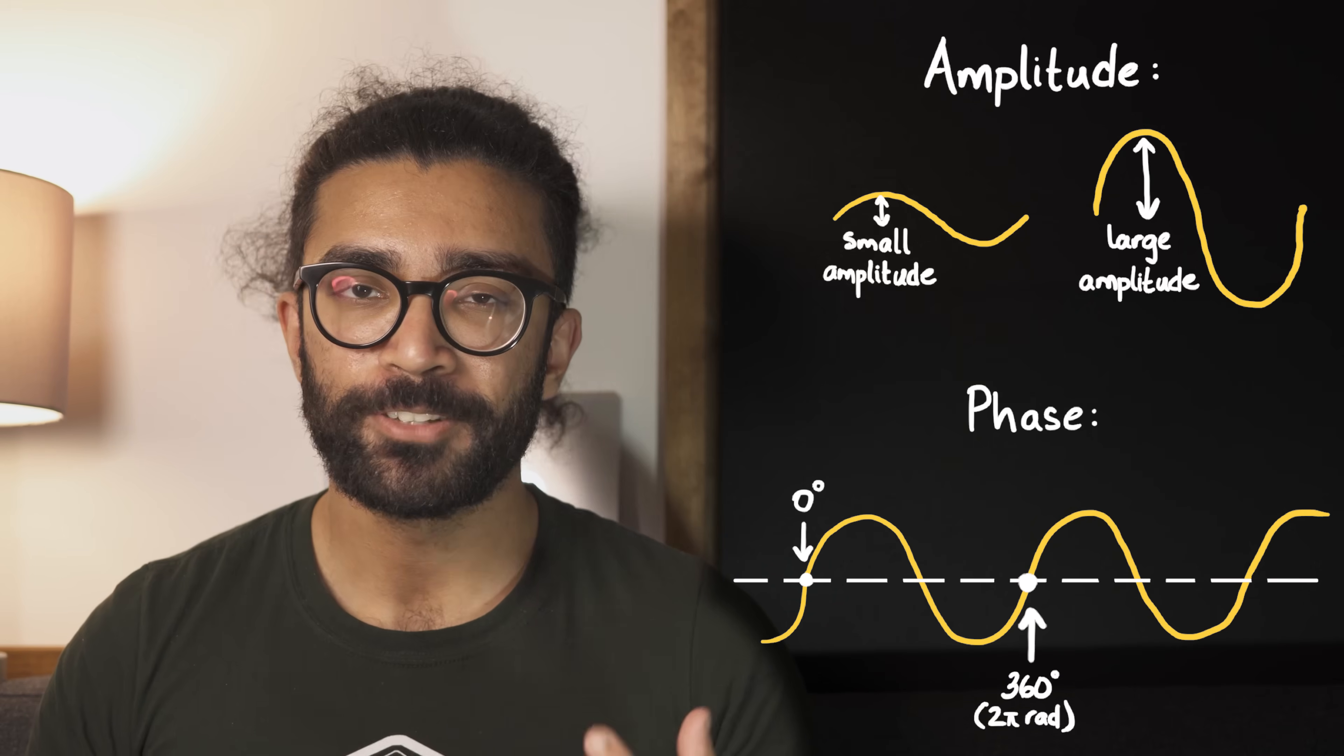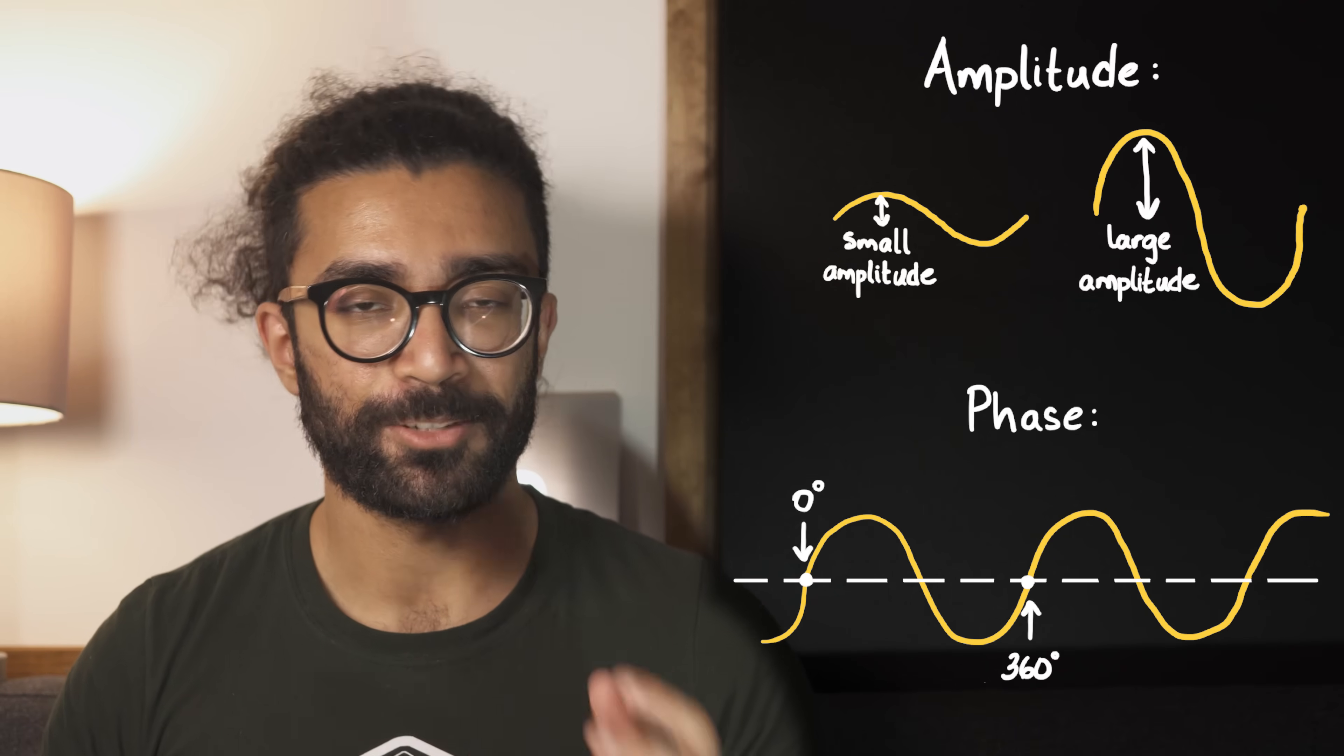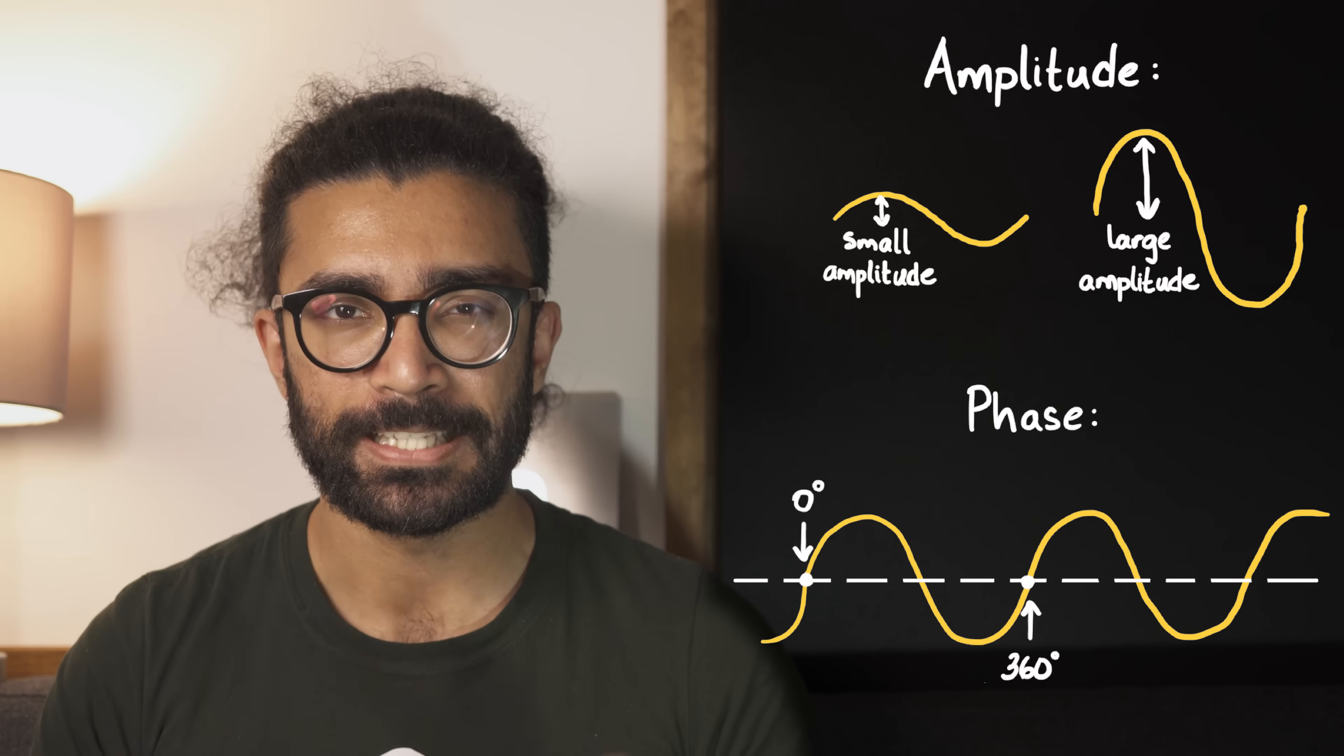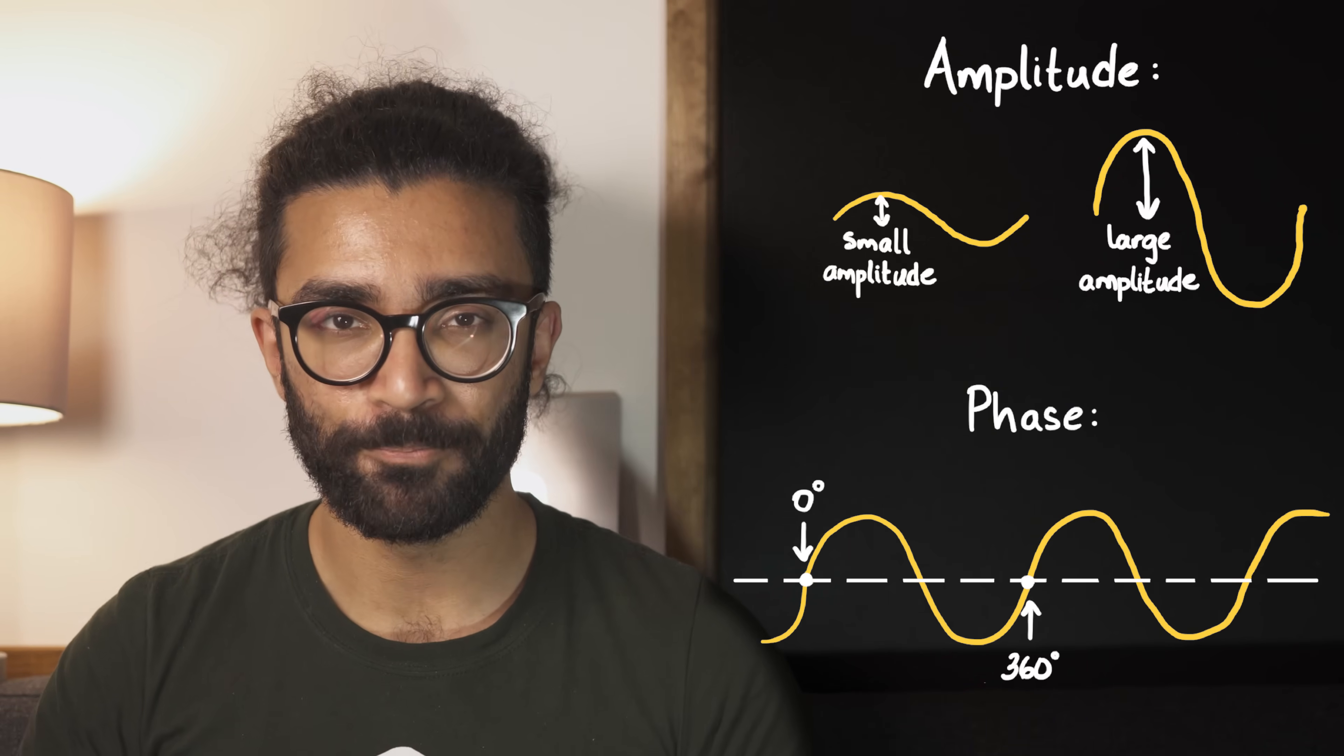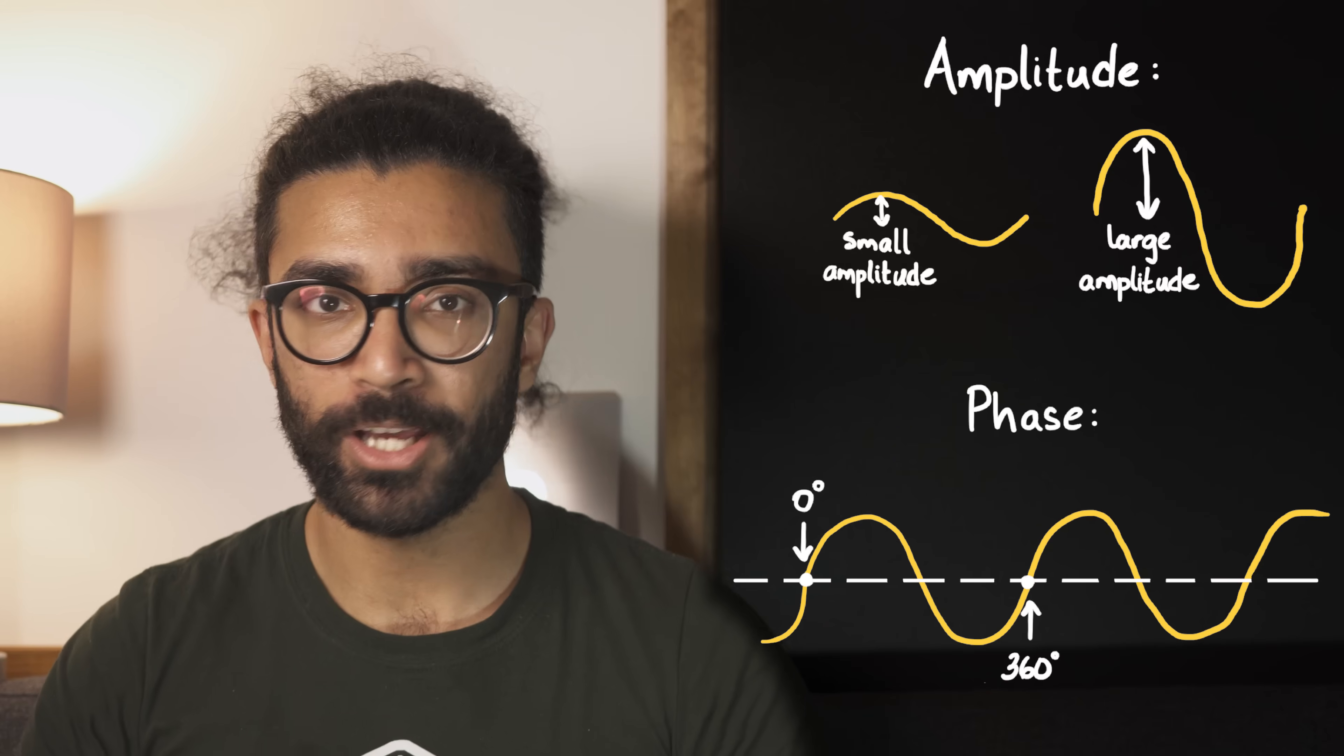Now both degrees and radians are measurements of angles, but we'll stick with degrees for now since that's what most people are familiar with. If you aren't sure about why we measure phase as an angle in terms of degrees, I'll leave some resources down in the description below. But for now, all we need to know is that the phase is just a measure of how far through the cycle we are.